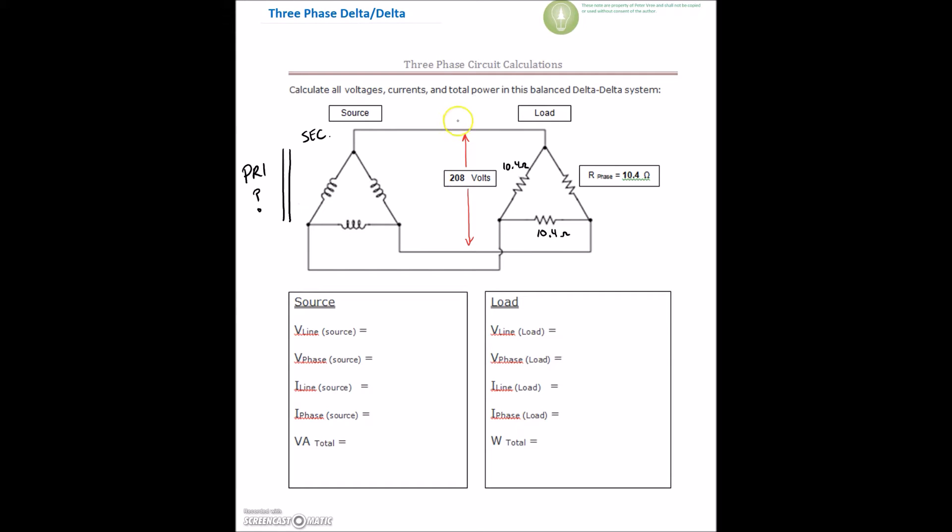Well, that voltage is from here to here. So that's external of our circuits. So we said in the previous video that if it's outside of the circuit, then that value is a line value. So that's our line voltage. So we can drop in our line voltage here. So we got 208 volts line.